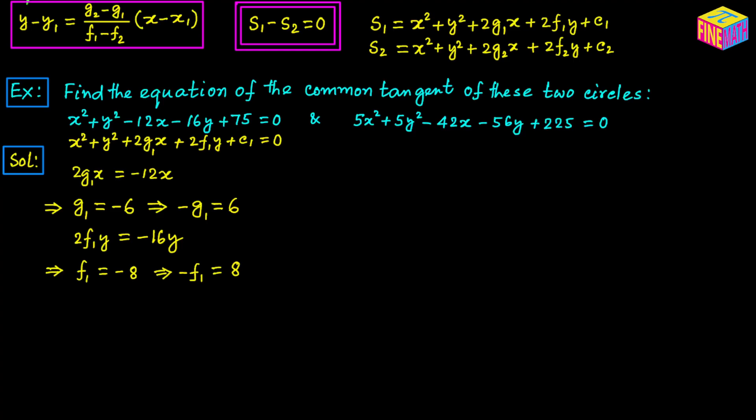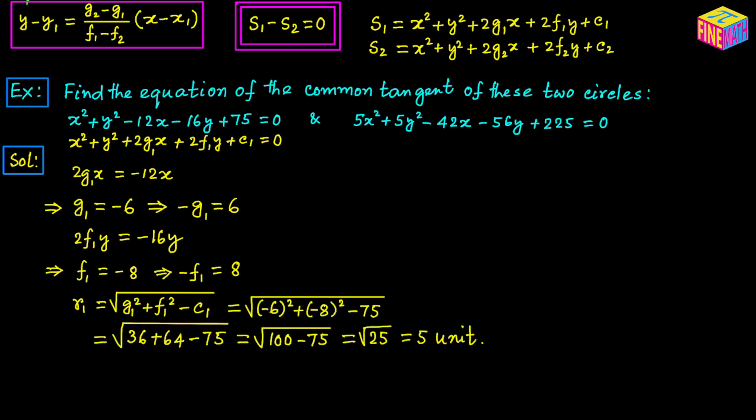Similarly, 2 F sub 1 times Y equals negative 16 Y, so F sub 1 equals negative 8 and negative F sub 1 equals positive 8. Now let's find the radius of the first circle using the formula: square root of G sub 1 squared plus F sub 1 squared minus C sub 1. Plugging in the values, the radius turns out to be 5 units.